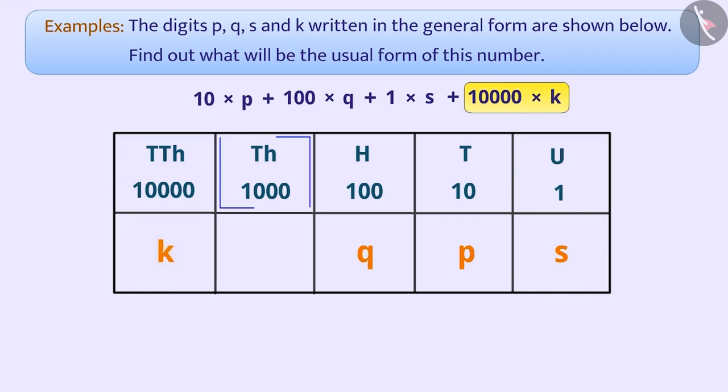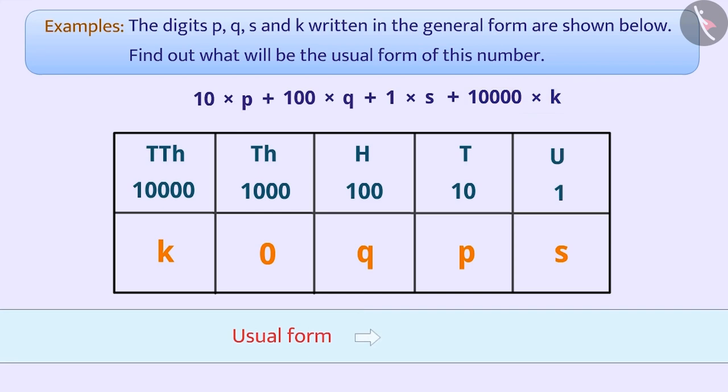There is no digit in the place of thousand. So here, we will write the placeholder 0. Now, we can say that the usual form of this number is k0qps.